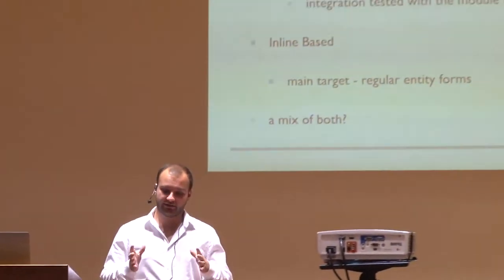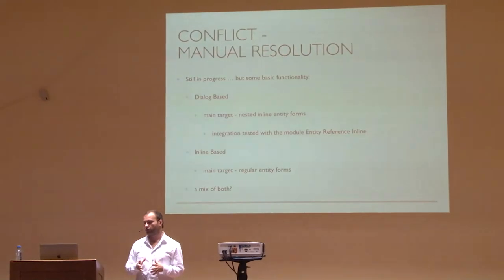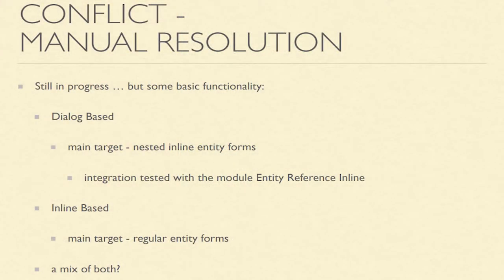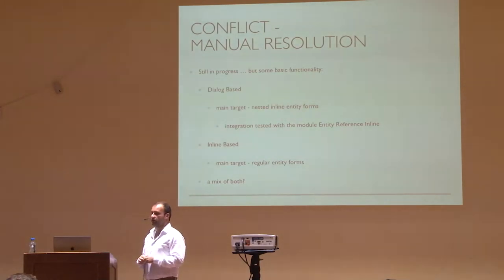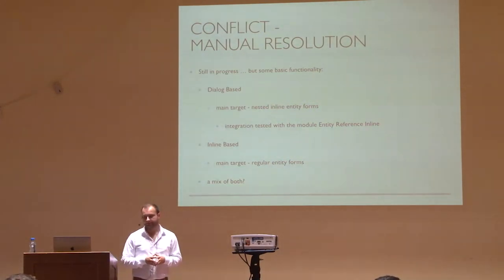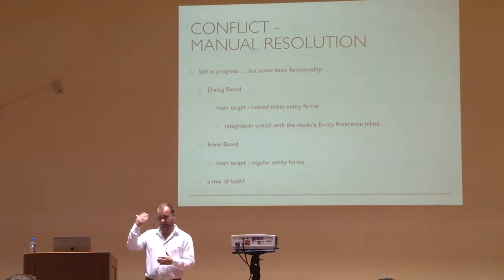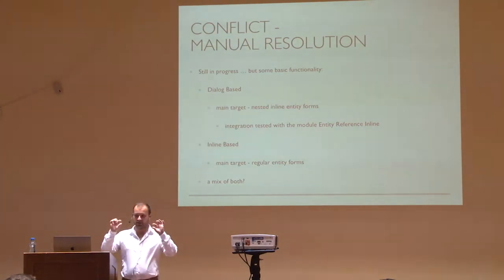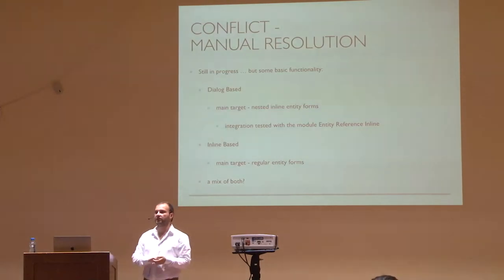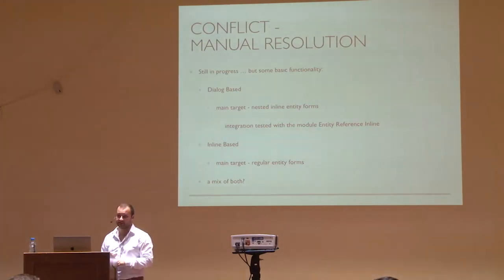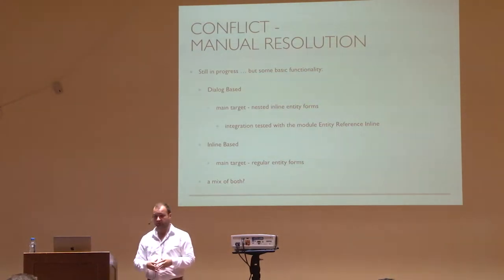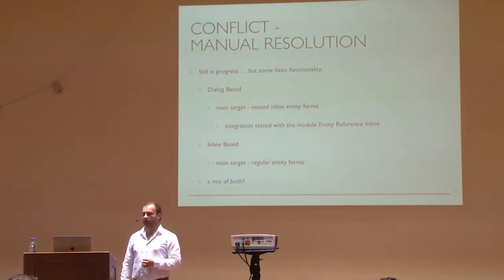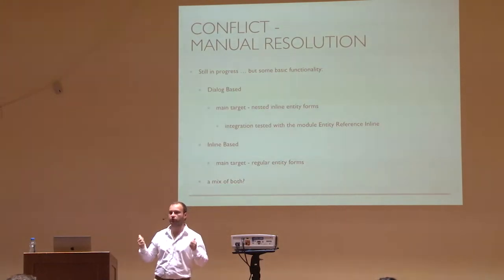The conflict entity handler is the one that controls everything and starts the whole process. If you want to, you can register your own handler on your entity type by extending from the provided one, or you can swap it in the hook entity type alter. So, during the second phase of the event system we resolve conflicts automatically, but it might happen that we are not able to resolve all conflicts. In that case, we need to provide the user with a way to manually resolve that conflict. We thought about and implemented partly two approaches: one is dialogue-based and the other is inline-based. The inline-based is mainly for regular entity forms — simple entities — and then you see the conflicting properties inline together with the field on the form. The dialogue-based is for nested inline forms where you have many entities like with paragraphs, and you can switch between entities like in a pop-up window.